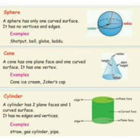Sphere. Sphere has only one curved surface. It has no vertices and no edges. Example: shotput, ball, globe, ladoo.